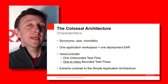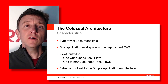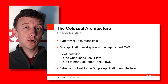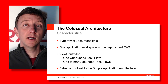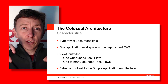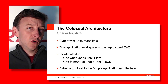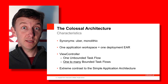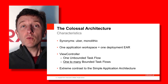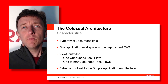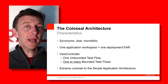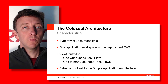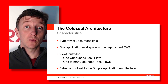So what are some of the characteristics of the Colossal Pattern? Well, the name Colossal is really synonymous with the terms Uber — a German word for large — or monolithic, or monster. We don't mean monster in a scary sense; what we really mean is something very large. This particular pattern is therefore an extreme of the Small and Simple application architectural pattern that we saw in the previous episode.